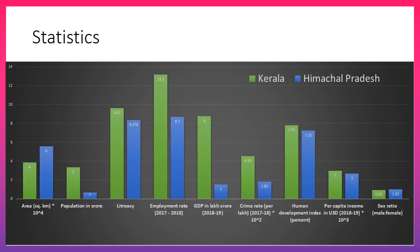Statistics is a branch of mathematics with applications in many fields. A data analysis can be done to compare the standard of living of people in Kerala and Himachal Pradesh. You can also analyze vegetation, agriculture, deforestation, industrialization and much more. Statistics is widely used in making government policies, investment decisions by multinational companies, and planning the development of the poor.